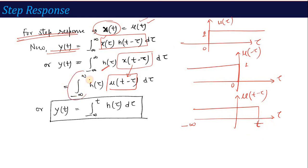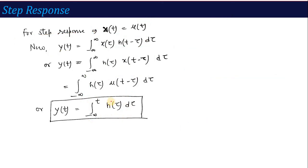So the limit condition of minus infinity to infinity is converted to minus infinity to t, giving h(τ) dτ. That means directly, the step response formula for a continuous time system — when the impulse response is given — is: y(t) = ∫_{-∞}^{t} h(τ) dτ. I will use this formula to solve questions.